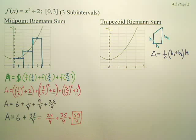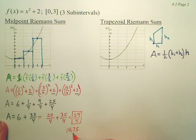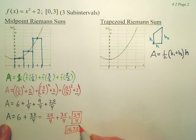That would be the area, units squared if you want to put that. The area under the curve would be 59 fourths, which is 14.75. You don't have to put that, but that's what it would be.